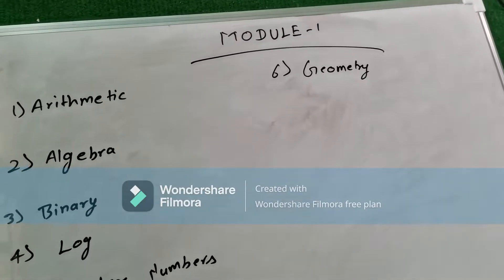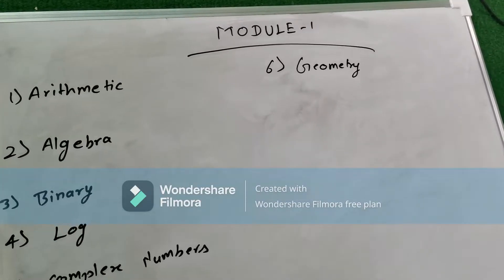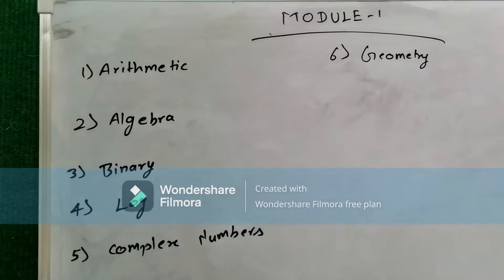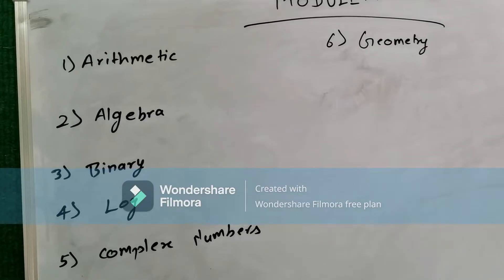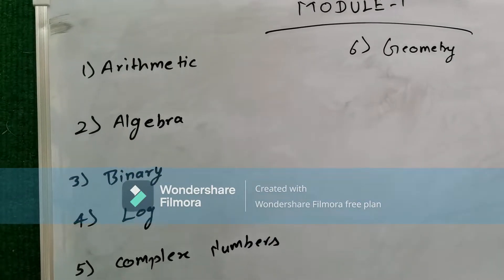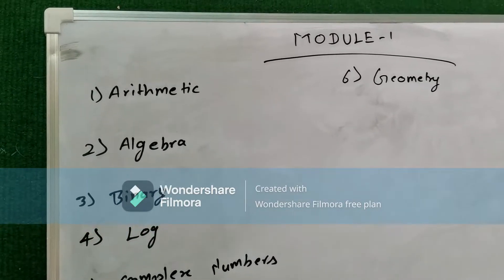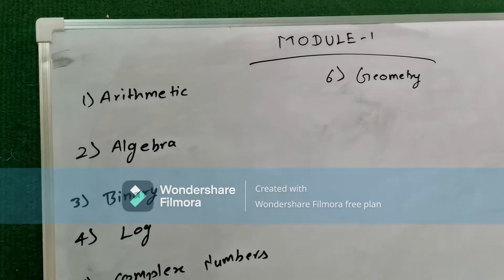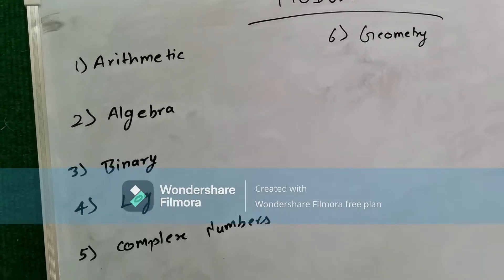Today let's talk about the syllabus of Module 1. You know arithmetic: addition, subtraction, division — but you also need to know the application of arithmetic, like associative property, dissociative property, and commutative property. In algebra, we will cover topics like x² + y², multiplication and division of algebraic expressions, use of brackets, and linear equations like y = mx + c.